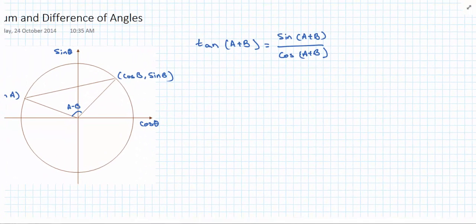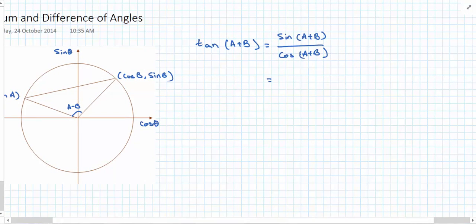And luckily, we've just expanded or found a relationship for sine A plus B and cos A plus B. So we're going to expand the numerator and denominator. Sine A plus B results in sine A cos B plus cos A sine B. And cos A plus B is cos A cos B minus sine A sine B.